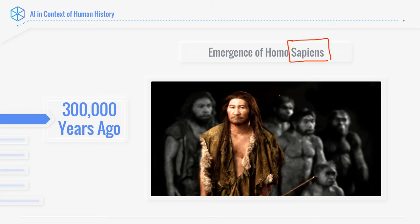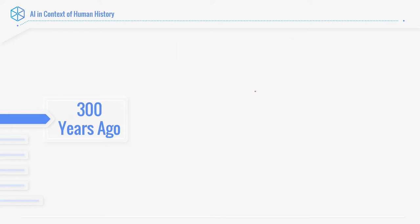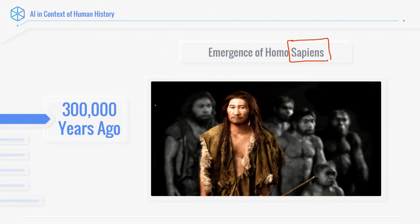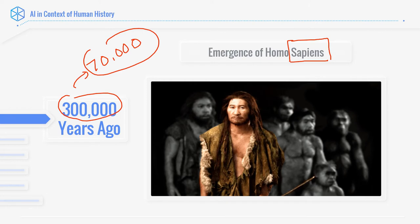From 300,000 years ago to around 70,000 years ago, the one thing that evolved was our brain — which is the source of all our intelligence.